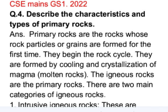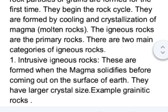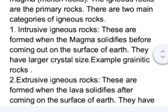There are two main categories of igneous rocks. The first is intrusive igneous rocks. Intrusive igneous rocks are those which are formed when magma solidifies before coming out on the surface of the earth. They have larger crystal size. An example is granitic rocks.